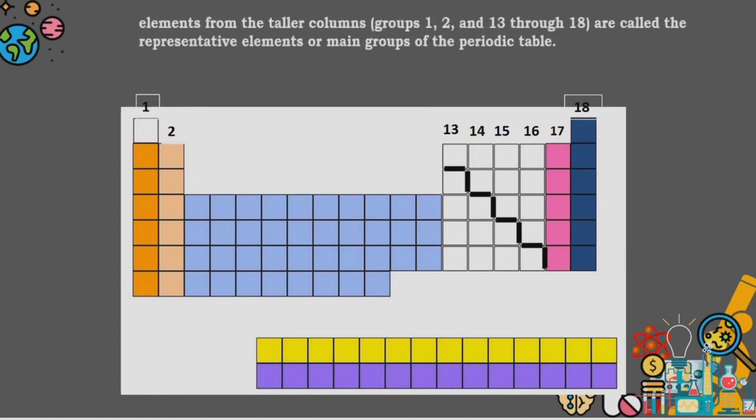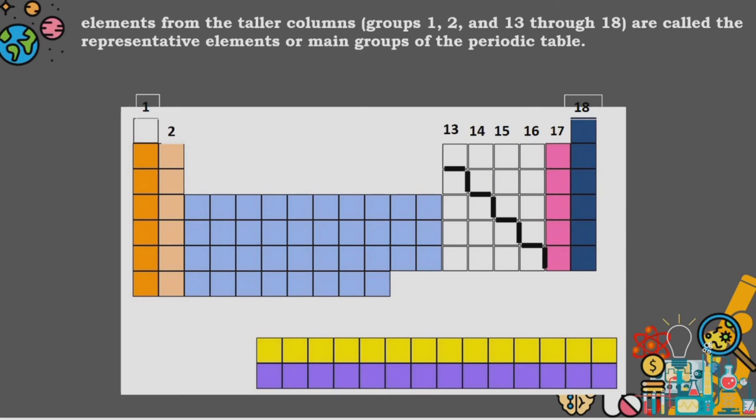Elements from the taller columns, groups 1, 2, and 13 through 18 are called the representative elements, or main groups of the periodic table.